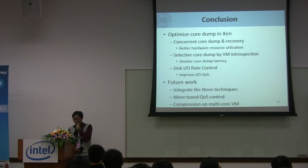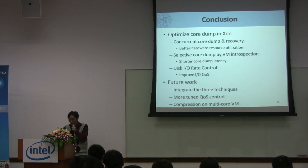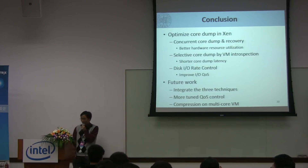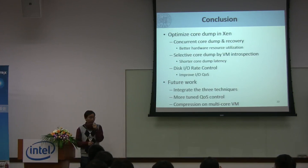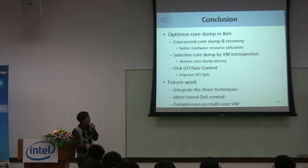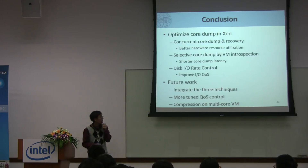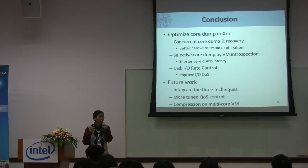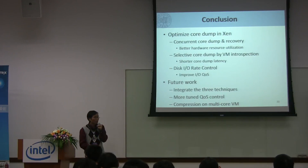In our future work, we plan to fully mature such a prototype by studying and investigating the combination of these three techniques, and probably incorporate more tuned quality-of-service control. We also plan to investigate in a multi-core environment where CPU resources are abundant, and we plan to use one core to compress some part of the memory before dumping it to disk.